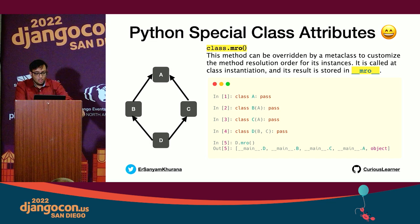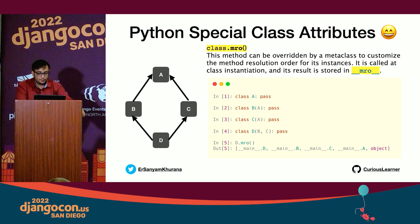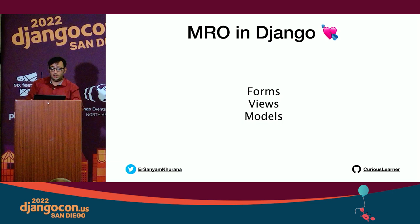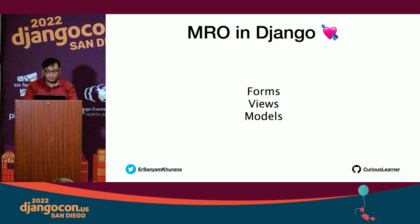If we talk about MRO specifically in Django, you'll see inheritance all over Django. For forms there is Form and ModelForm; for views there are TemplateView and RedirectView; for models there are three inheritance approaches: abstract base classes, multiple table inheritance, and proxy models. In the case of multiple table inheritance, you'll observe MRO in action.